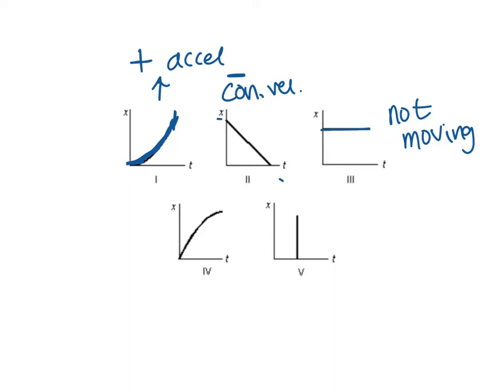The fourth graph has a curved line headed up on the graph, so it's a positive direction or forwards. This one is getting flatter towards the end — much flatter here than it was before — so that means it's slowing down. Slowing down is a type of acceleration, so it is accelerating and slowing down.